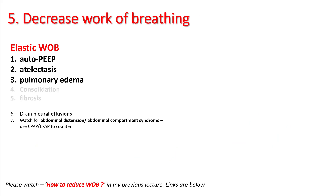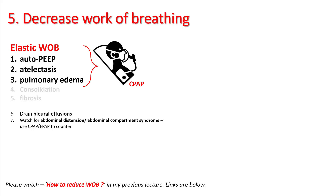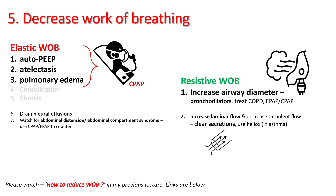Lastly, you have to decrease the work of breathing. There are three types: elastic, resistive, and expiratory. Elastic work of breathing is a problem in patients with auto-PEEP, atelectasis, and pulmonary edema — all of which respond well to CPAP. Consolidation and fibrosis also increase elastic work of breathing but don't respond well to CPAP. If you have pleural effusion, draining it can help. For resistive work of breathing, use bronchodilators and clear secretions. You can also use heliox to increase laminar flow. Expiratory work of breathing is mostly from auto-PEEP, and you can use CPAP to counter it. For more details, please watch my previous lectures on reducing work of breathing.